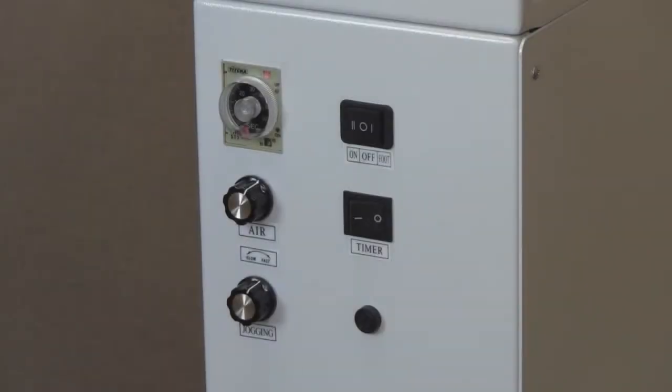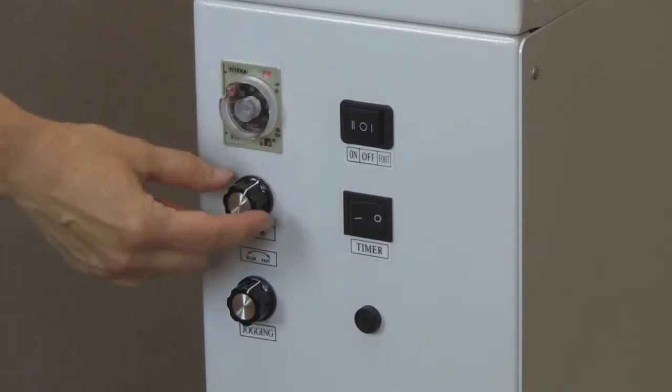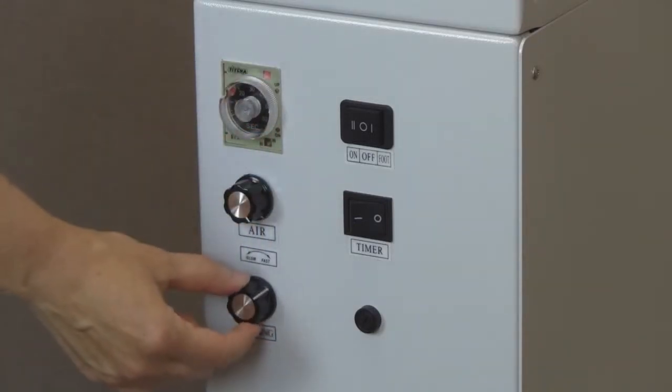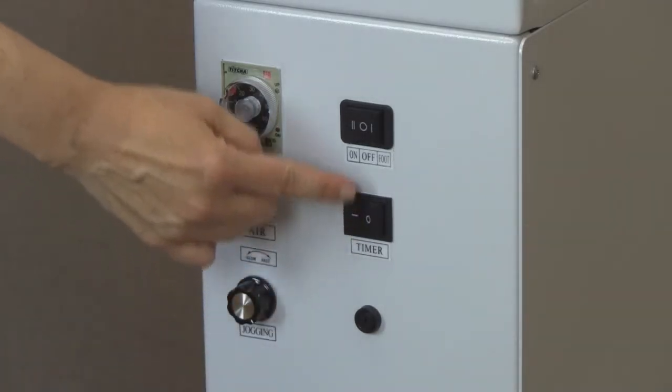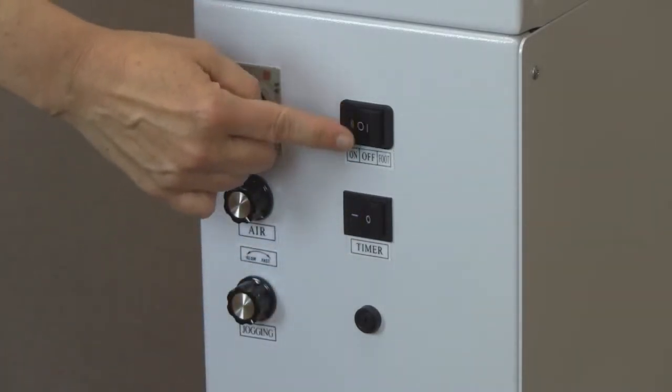The A1 control panel includes an adjustable 60-second timer, adjustable vibration and airflow knobs, a timer on-off switch, and an on-off switch or foot pedal switch.